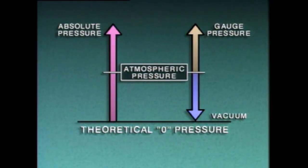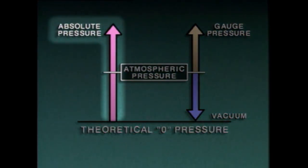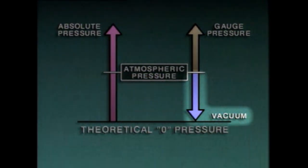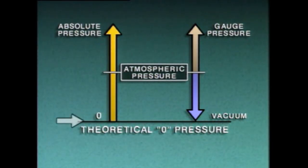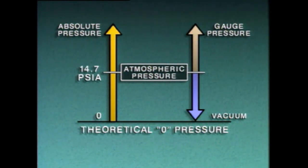The way that atmospheric pressure is taken into account depends on the scale used to measure the pressure. Three scales commonly used for pressure measurements are the absolute pressure scale, the gauge pressure scale, and the vacuum scale. The absolute scale begins at theoretical zero pressure, a condition of no pressure and a total absence of air. On the absolute scale, atmospheric pressure is 14.7 pounds per square inch absolute, or PSIA.